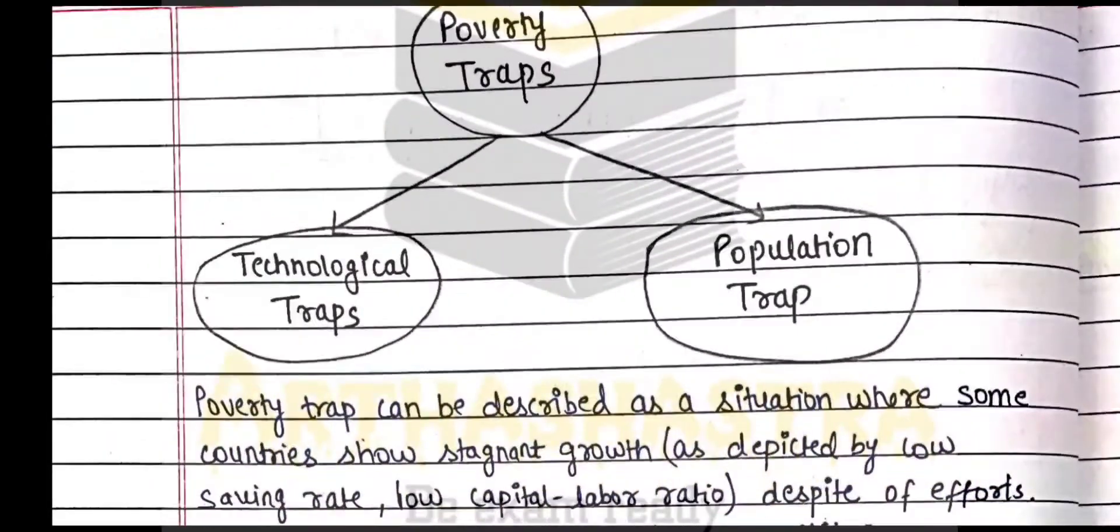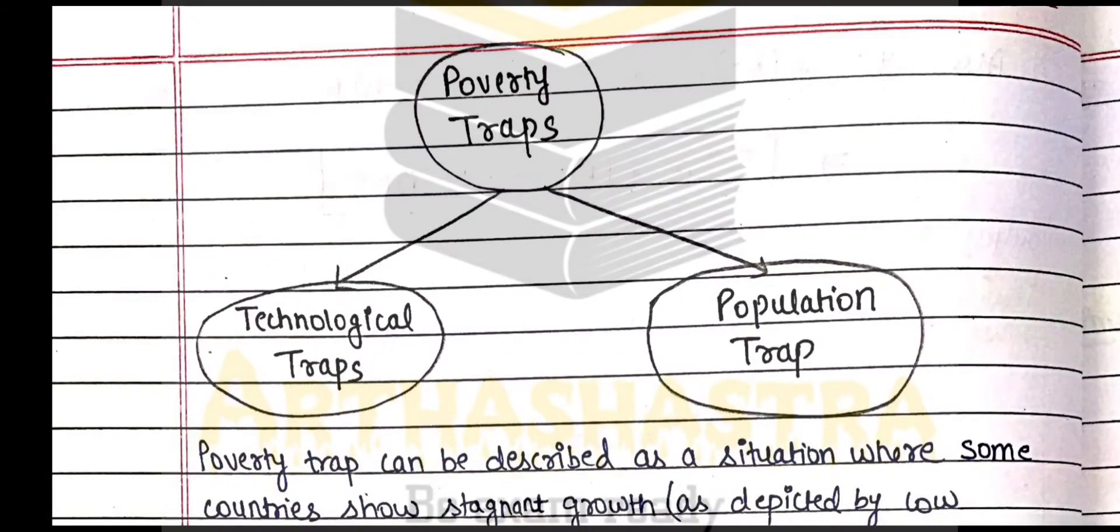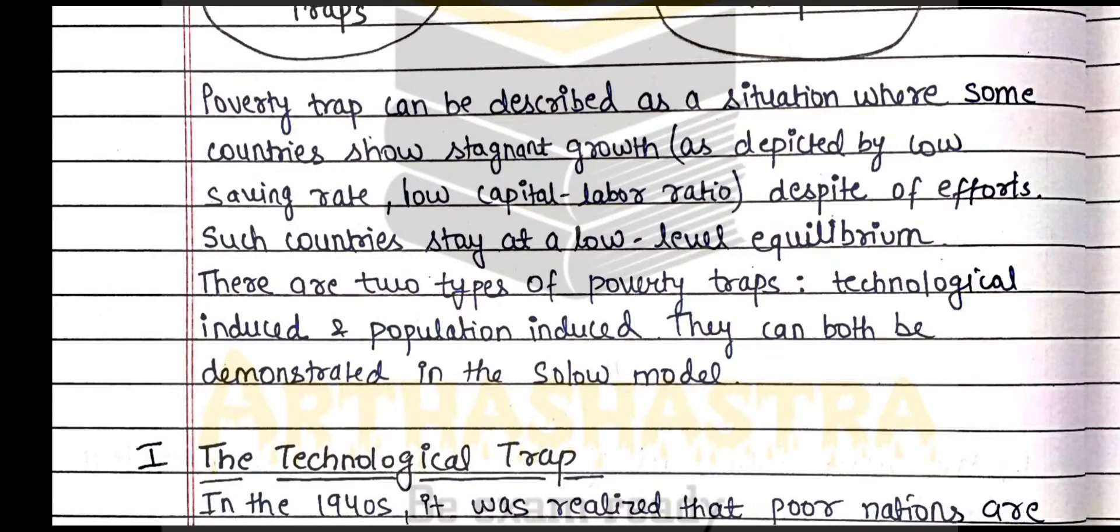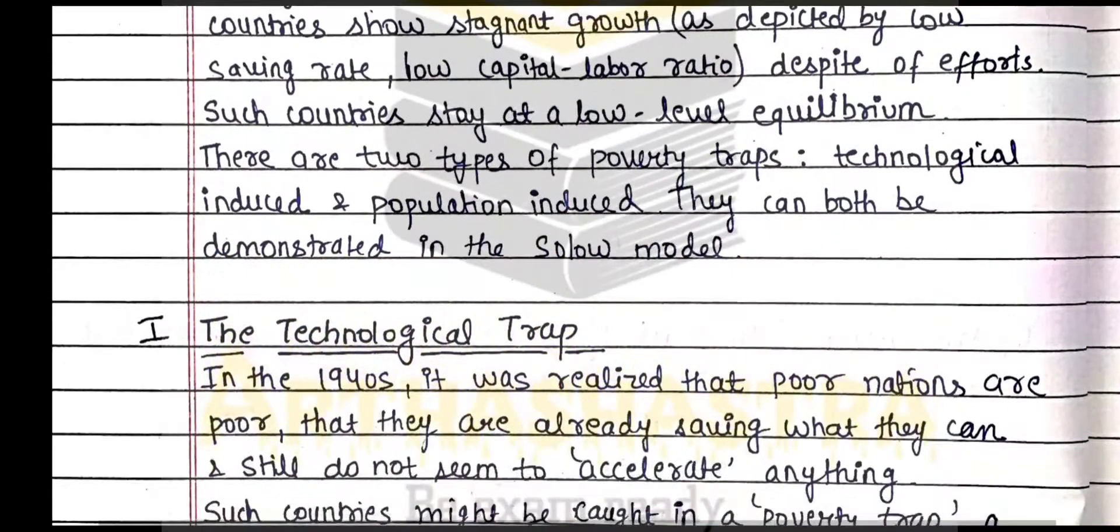The second part of the answer is poverty traps. We are defining the traps, the technological trap. It is related to the Solow model only.